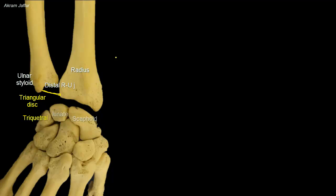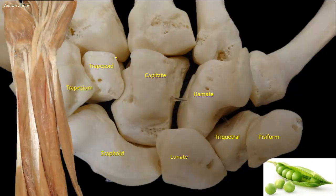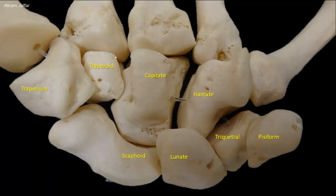The triquetral articulates with the disc, while the scaphoid and lunate articulate with the distal end of the radius. The pisiform is a small pea-shaped bone, as its name indicates. It lies on the palmar surface of the triquetral. The pisiform can be felt on the anterior aspect of the medial border of the wrist and can be moved from side to side when the hand is relaxed. Some authorities consider the pisiform as a sesamoid bone in the tendon of flexor carpi ulnaris.